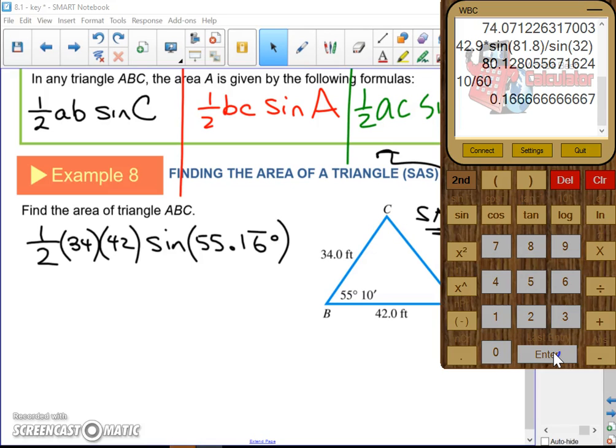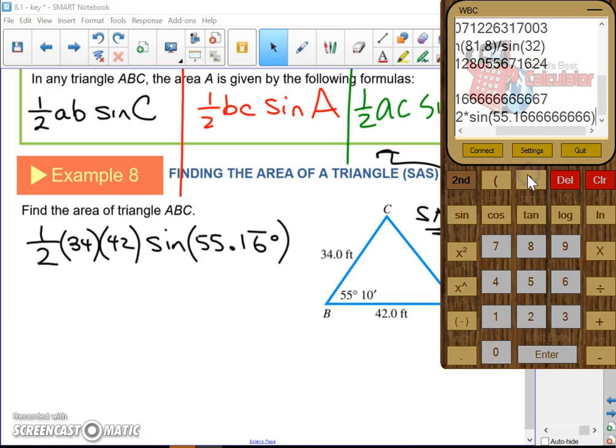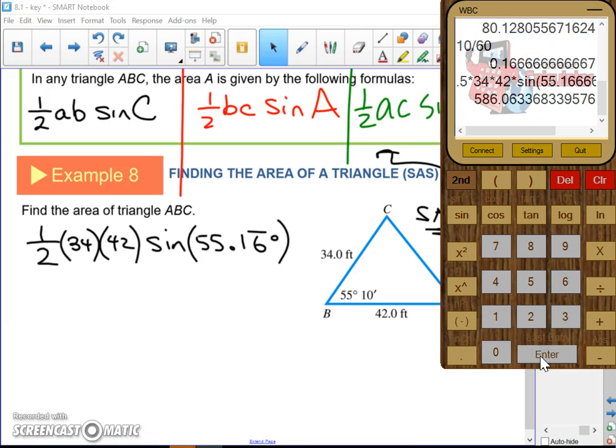Let's just type that in: one half times 34 times 42 times sine 55.16. Give it about 586. This is the area, so don't mess up the units there. 586 square feet.